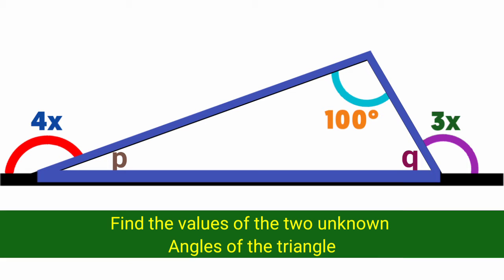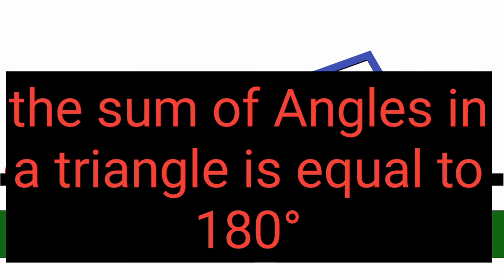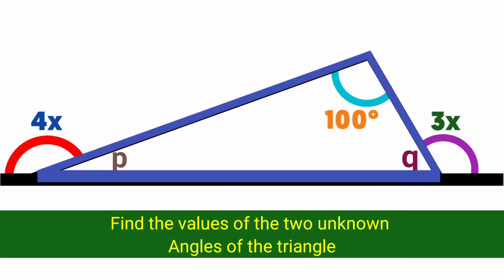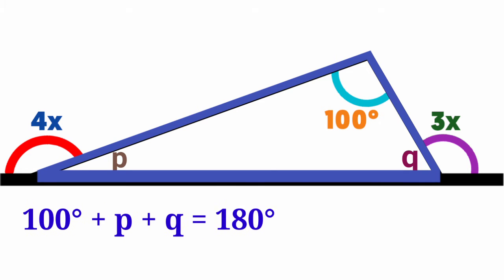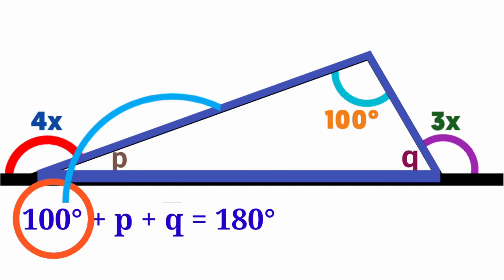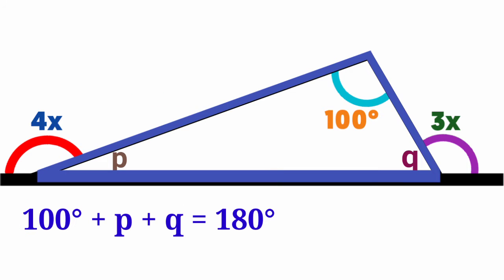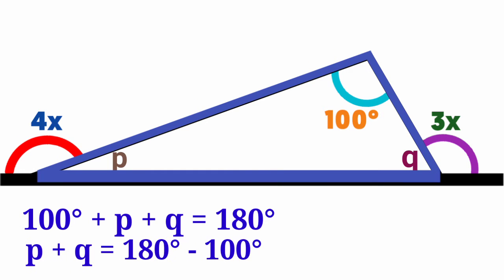The sum of angles in a triangle is equal to 180 degrees, so we form an equation: 100 degrees plus P plus Q is equal to 180 degrees. The 100 degrees moves to the other side, giving us P plus Q is equal to 180 minus 100, which is 80 degrees.